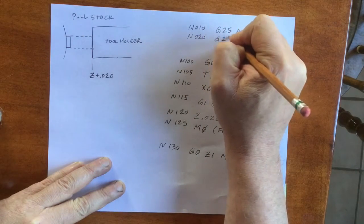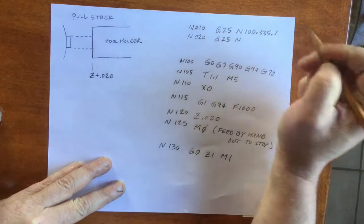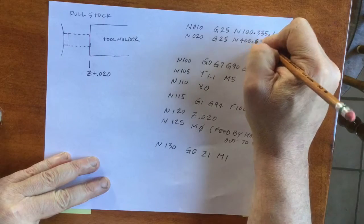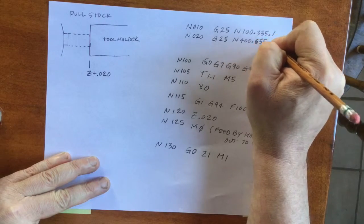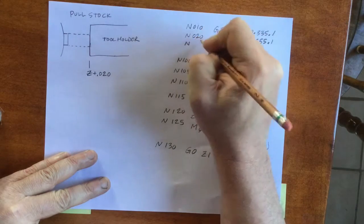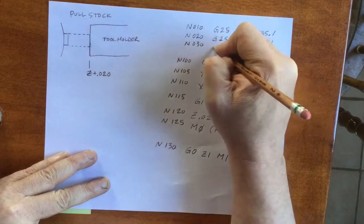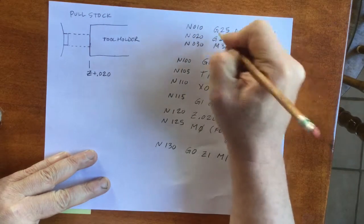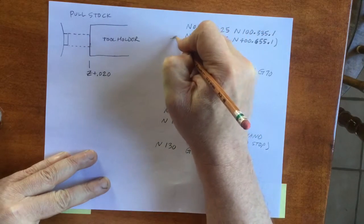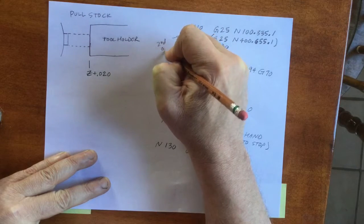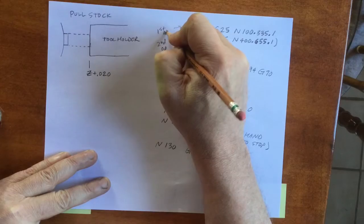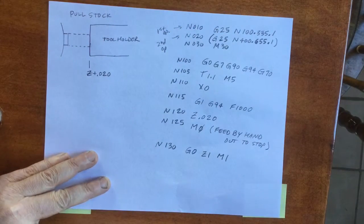Next, I'll do the same exact thing for the second op. Then M30 to end the program. If you put code in parentheses, the control sees it as a comment and it doesn't do it. Then, for the second op, put the parentheses around line 10 and remove the parentheses around line 20.